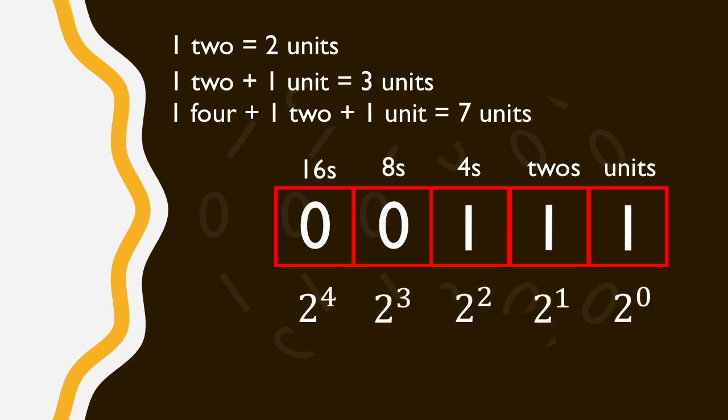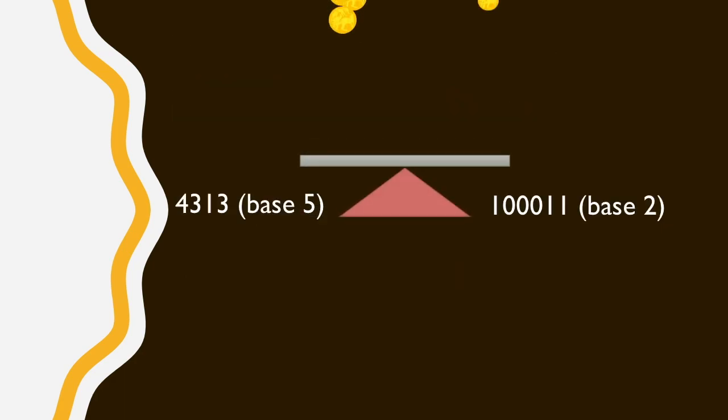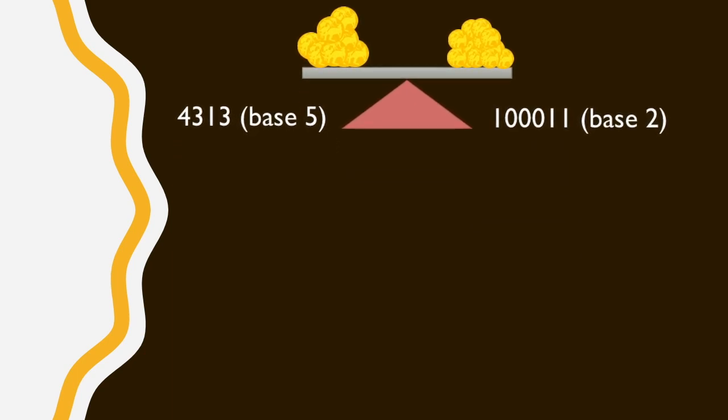An interesting thing you might notice, as might be the case with some empirical units, is that we lose intuition about how big a number is. How big is the base 5 number 4, 3, 1, 3, if we compare it to the binary number 1, 0, 0, 0, 1, 1?